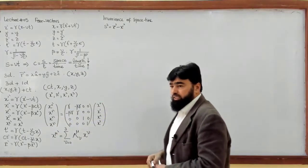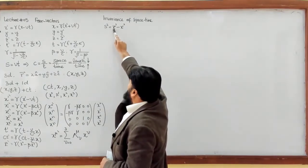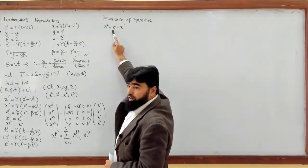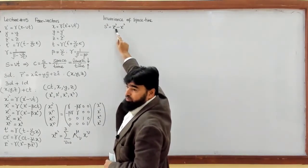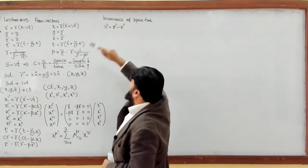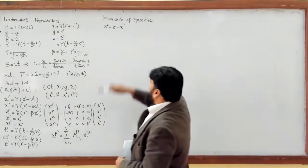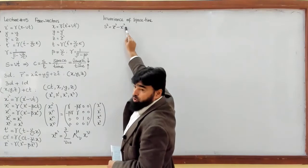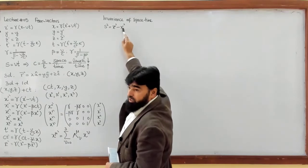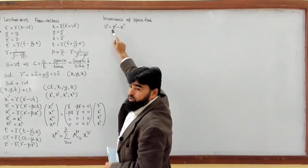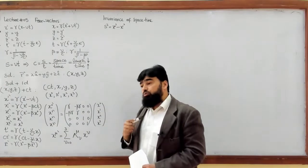Now what is this? s-squared is a distance term, and this is between two frames — both frames are measuring this s. x₀ is the time coordinate of one frame, and x₁ is the space coordinate. So this is the space-time combination, and s-squared is the length measured in that four-vector.